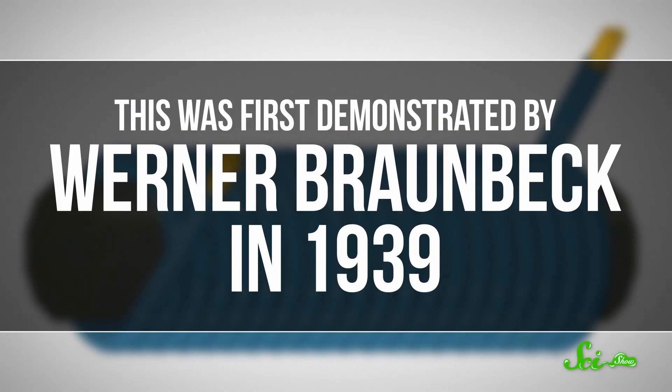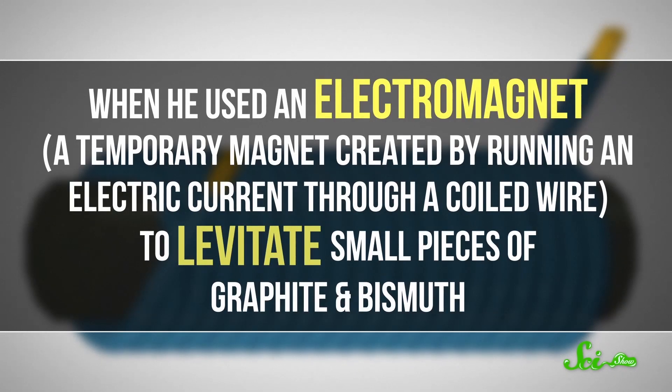This was first demonstrated by Werner Braunbeck in 1939, when he used an electromagnet — a temporary magnet created by running electric current through a coiled wire — to levitate small pieces of graphite in bismuth. Then, scientists kind of forgot about it until the 1990s.